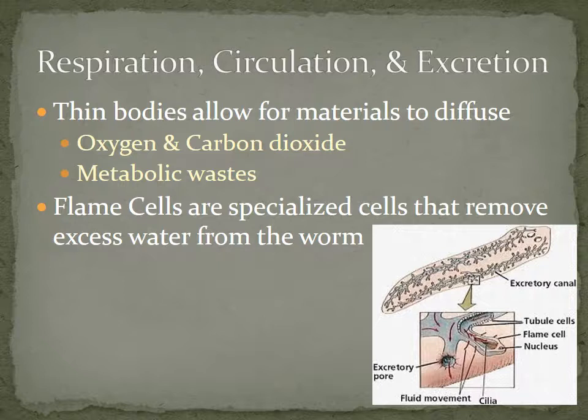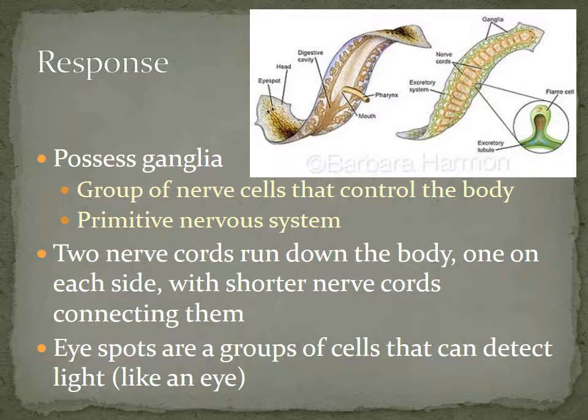There are also flame cells — specialized cells found in flatworms that remove extra water from them. In the diagram, you can see the flame cells with excretory pores attached to several of them together. That pore leads out of the flatworm, allowing water to exit through it.